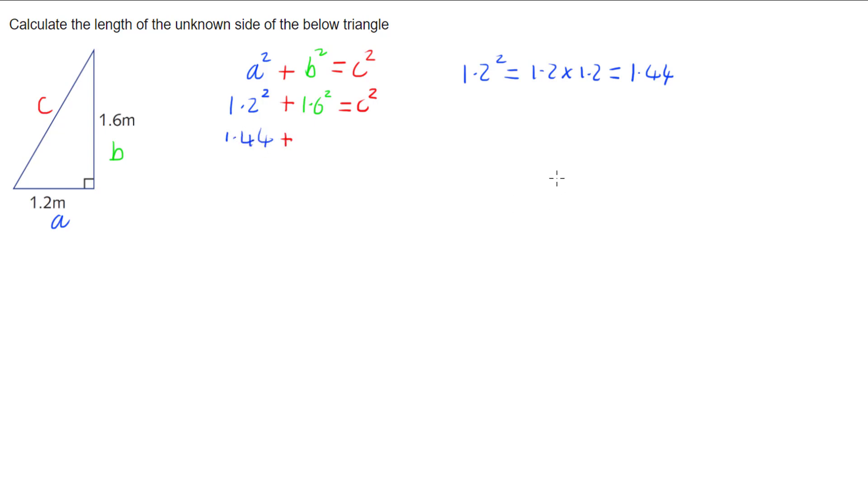Adding on 1.6 squared, 1.6 squared is the same as 1.6 times 1.6, which is 2.56.